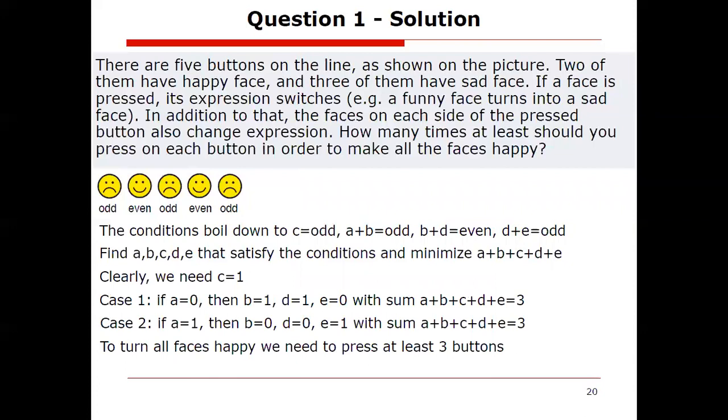Now we need to consider cases depending on whether the first button gets pressed at all or not. If A equals zero, then we can see B must equal one to be the smallest and also give us an odd sum. D must equal one because B is equal to one and we want their sum to be even, and E must equal zero. Again, to minimize everything, giving us that the total sum is just three, and B, D, and C are one. If A equals one, if we do press that first button, then B equals zero, D equals zero, E equals one, and the sum is once again three. So to turn all the faces happy, we need to press at least three buttons.